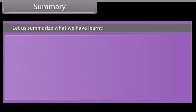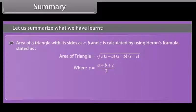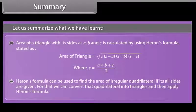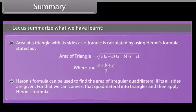Summary. Let us summarize what we have learned. The area of a triangle with its sides as A, B and C is calculated by using Heron's formula. Heron's formula can also be used to find the area of an irregular quadrilateral if all its sides are given. For that, we can convert the quadrilateral into triangles and then apply Heron's formula.